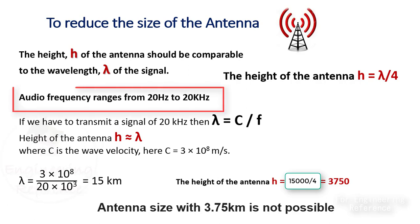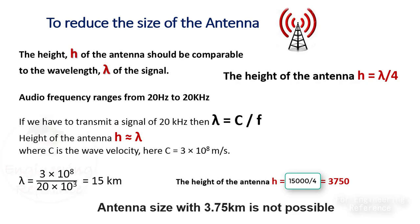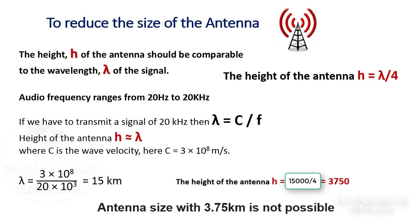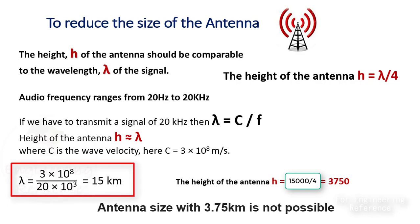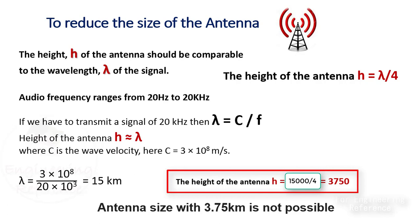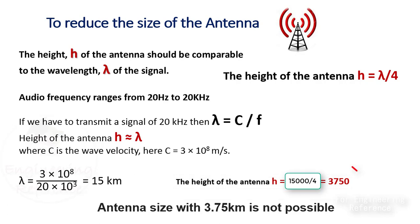For example, audio signal's frequency ranges from 20 Hz to 20 kHz. Let's consider we have to transmit a signal of 20 kHz. The signal wavelength lambda is expressed as c divided by f, where c is the wave velocity with a value of 3 times 10 to the 8th power meters per second. So lambda equals 3×10⁸ divided by 20×10³, which gives a wavelength of 15 km. The height of the antenna h should be lambda by 4, so the height here is 15,000 divided by 4, that is 3,750 meters. An antenna size of 3.75 km is not possible.